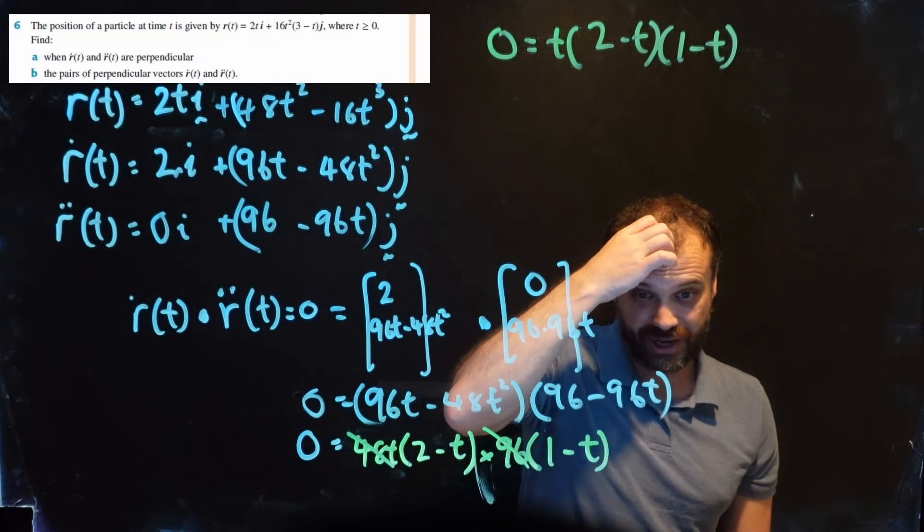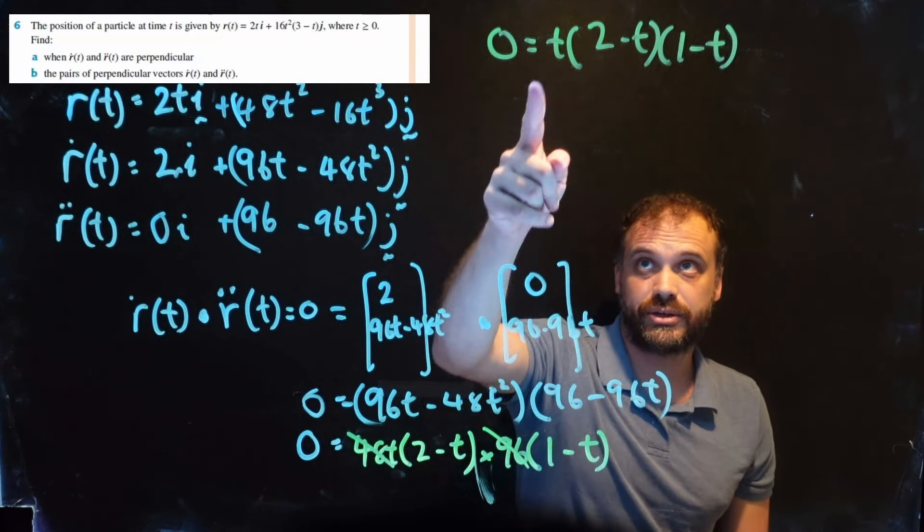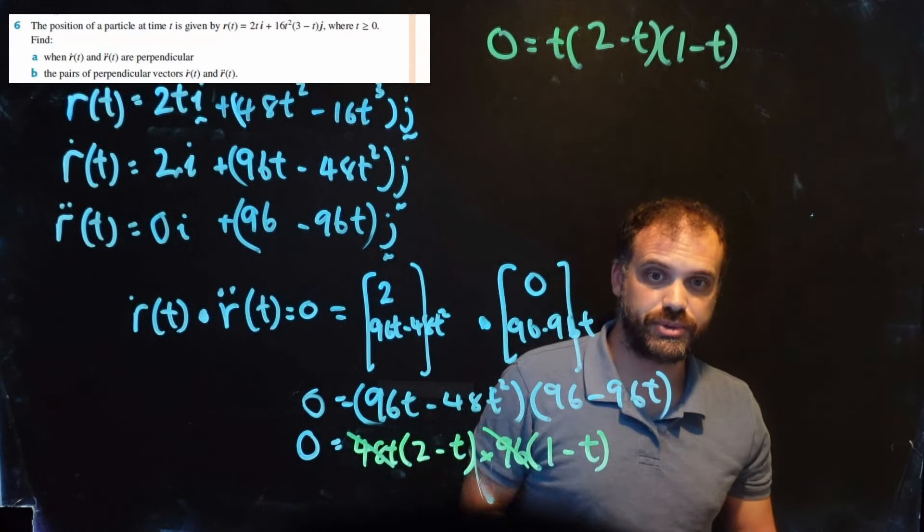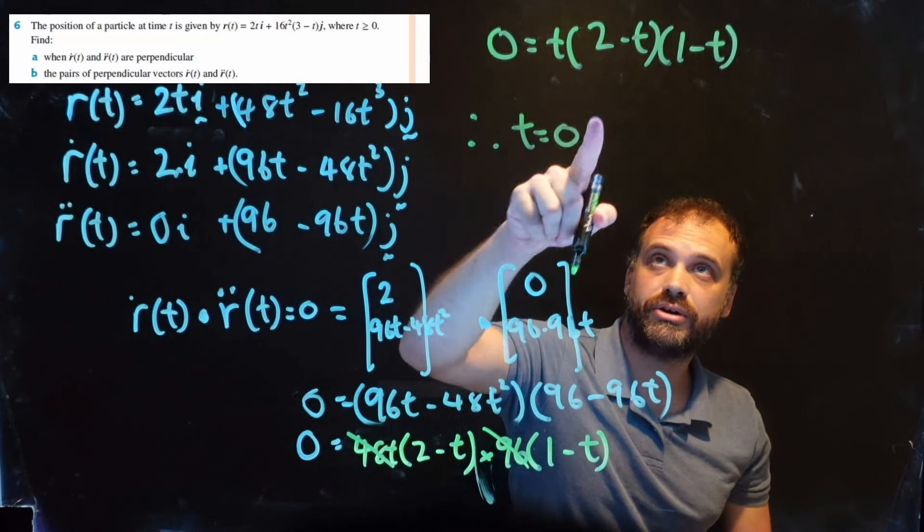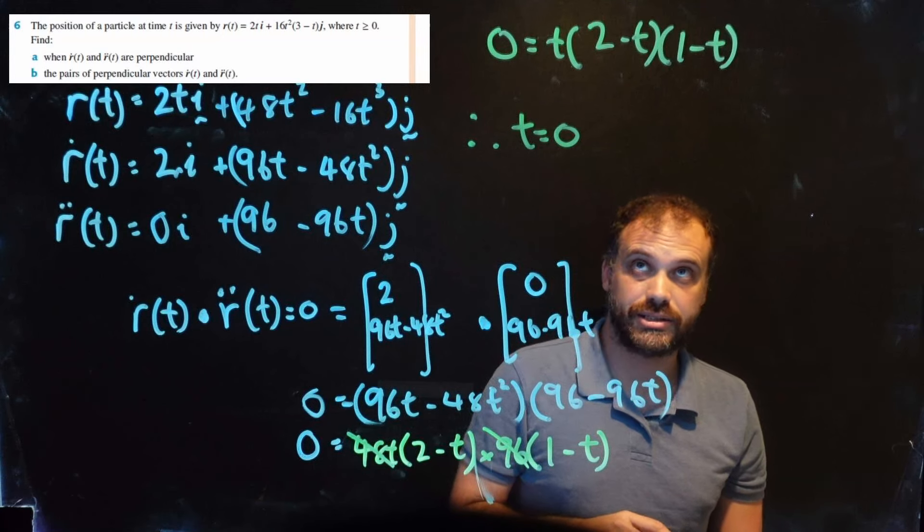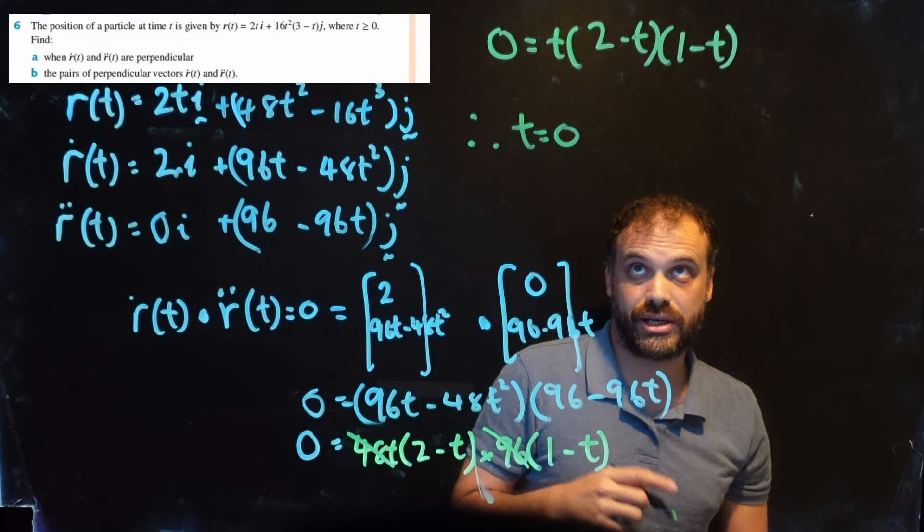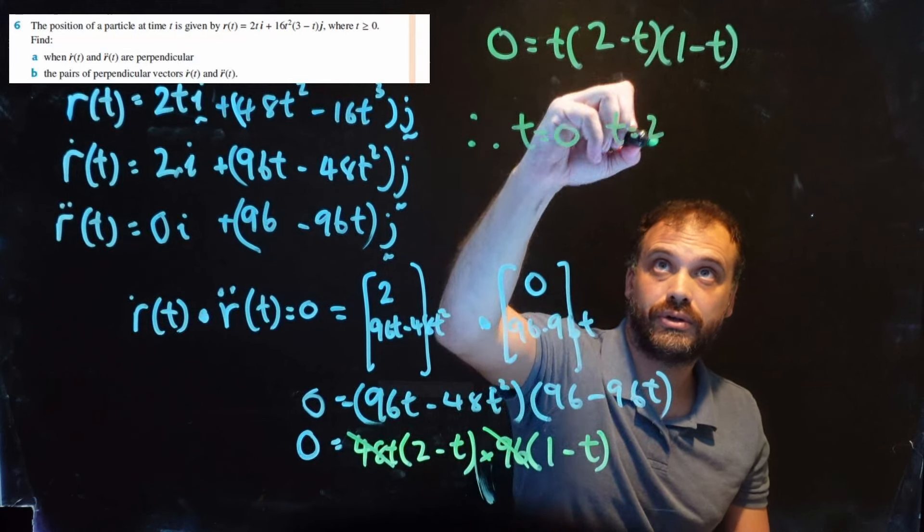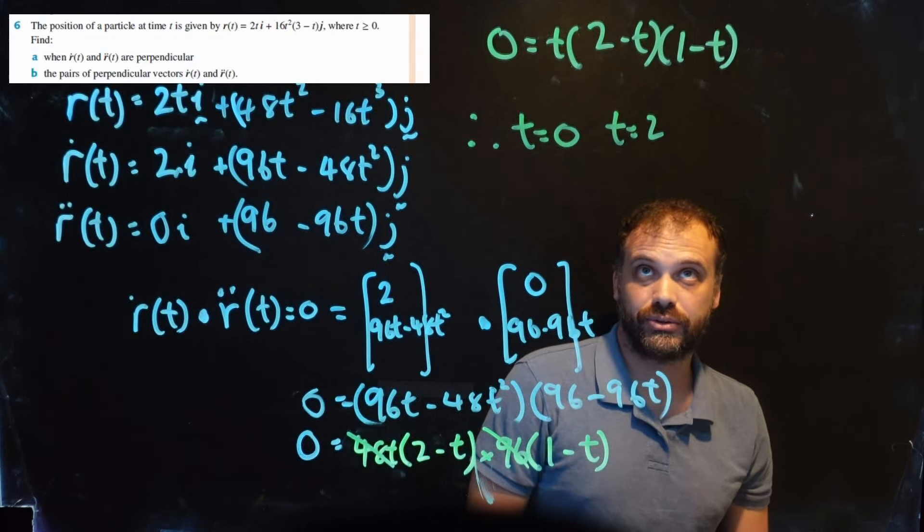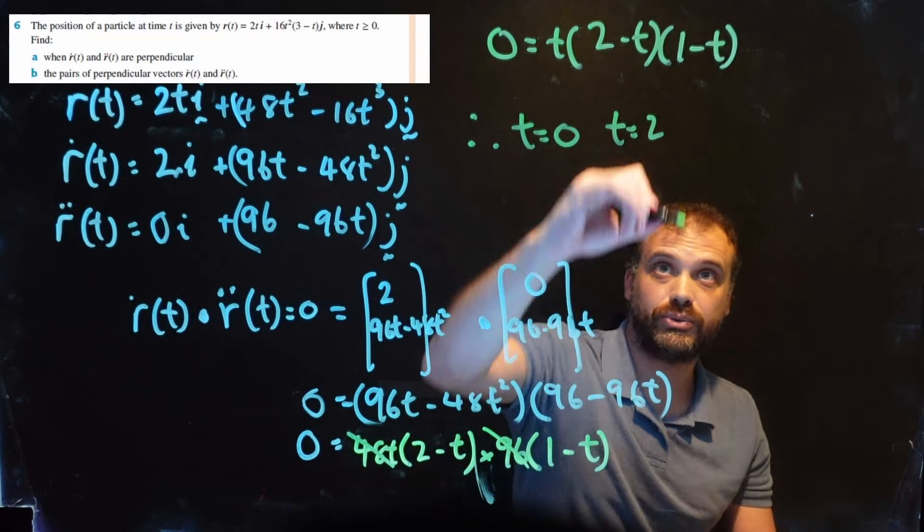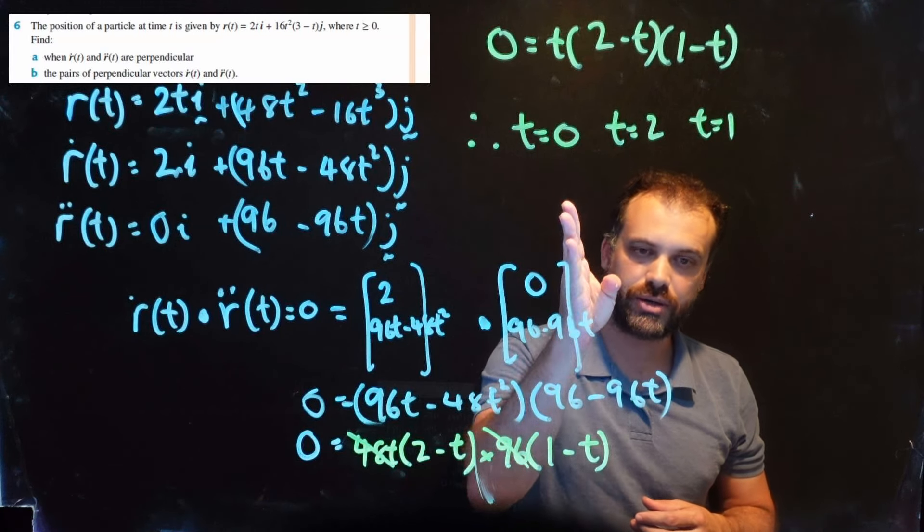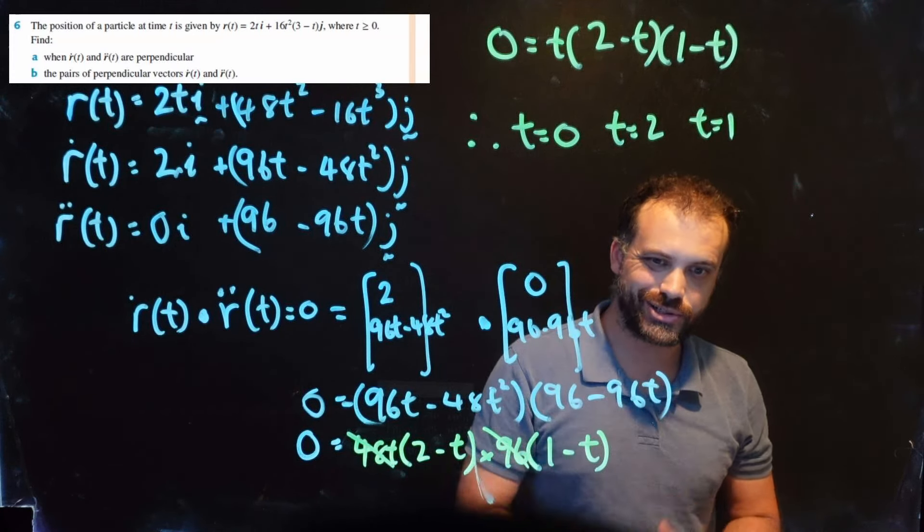Oh great, and now I can just use null factor law, right? Because if 0 equals this times this times this, then this must be 0, or this must be 0, or this must be 0. Therefore, t must equal 0, or 2 - t must equal 0 which means t equals 2, or 1 - t must equal 0 which means t equals 1. That's very cute. It seems like these are perpendicular at time 0, time 1, and time 2.